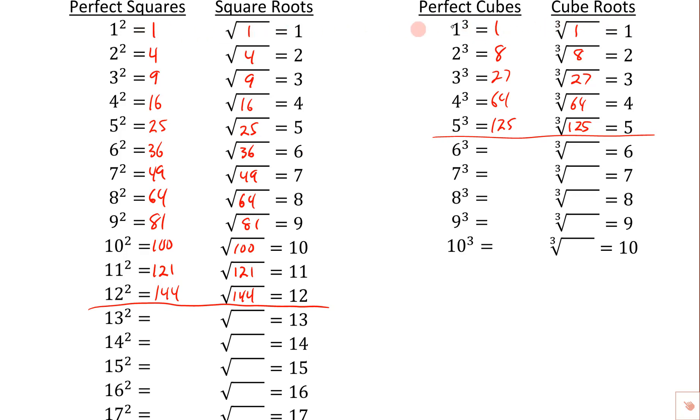The square root of 1 and the cube root of 1, 1 is both a perfect square and a perfect cube, so it's in both lists. And I also want to point out the 64. 64 is in both lists, 64 is a perfect cube of 4, it's also a perfect square of 8, so notice that that's in both lists.